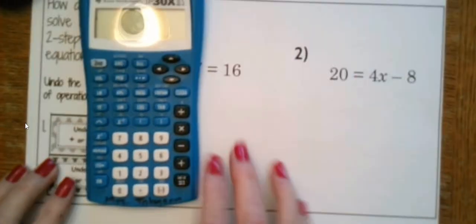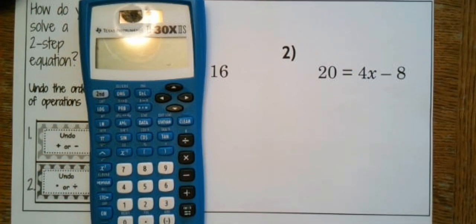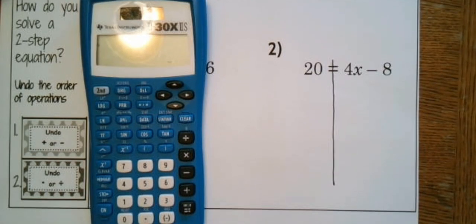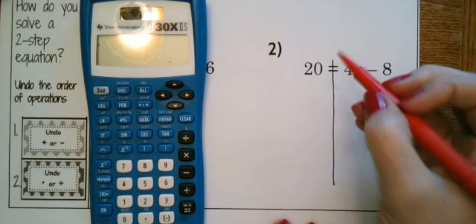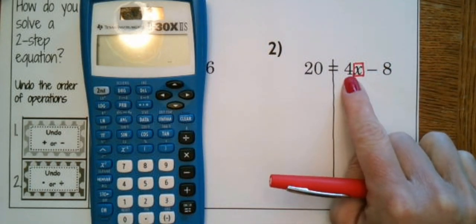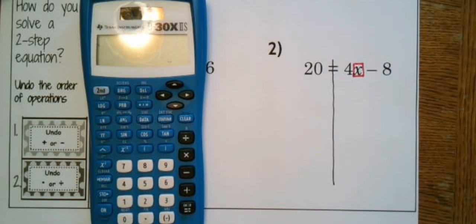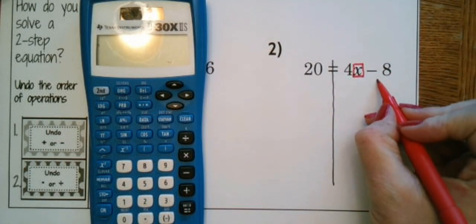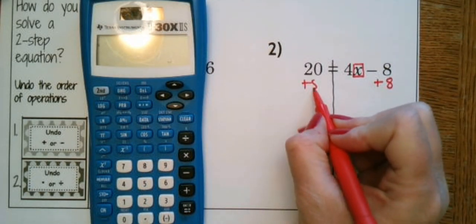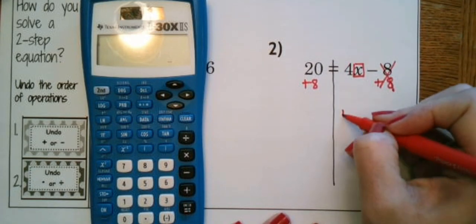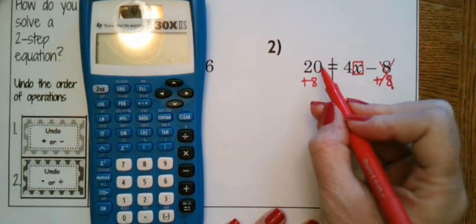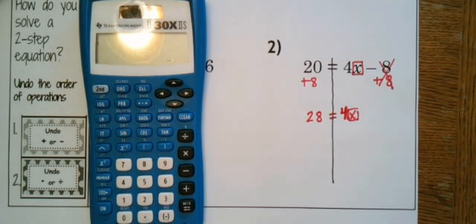Let's give it a try. Here's number two — have your calculators ready. I'm going to put a line down my equal sign. I can see that I am the X, and I am attached to four closest friends. Then I have minus eight acquaintances over here. Dad comes down and says you've got to send some people home. We're going to undo the minus eight — send home those acquaintances with the inverse, adding eight to both sides. That gives us 4X equals 28.